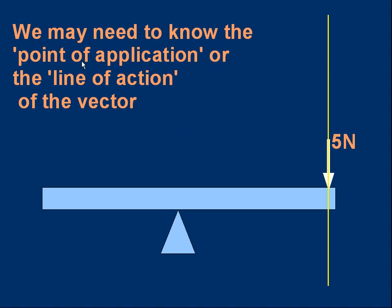And there's a couple of concepts you need to know. We could talk about the point of application of the force. We may need to know the point of application. That's where the force is pressing against the wooden beam in this case. But more commonly you'll hear the term line of action used. So all vectors have a line of action.